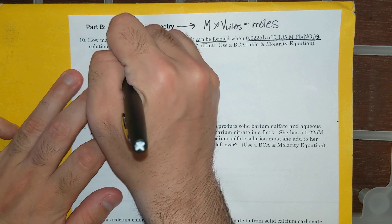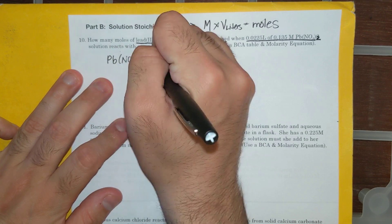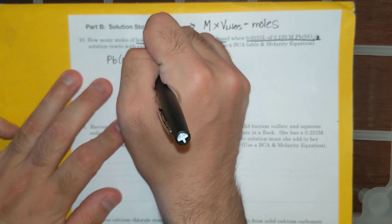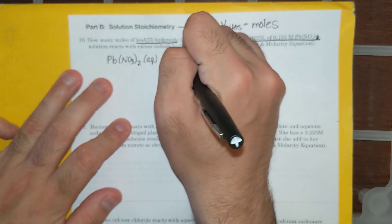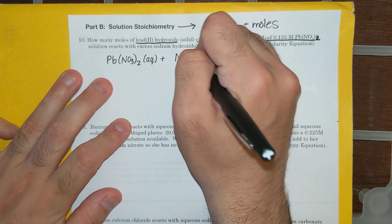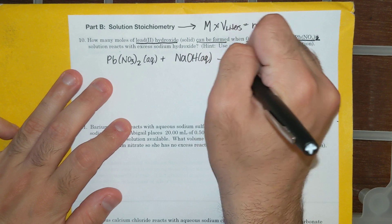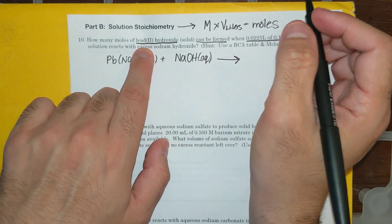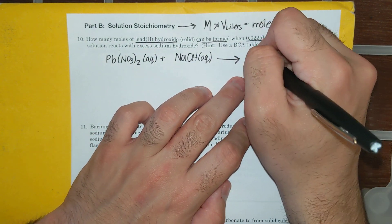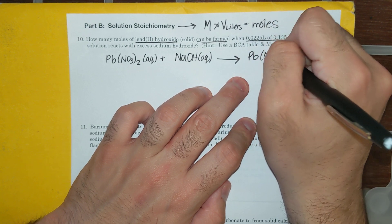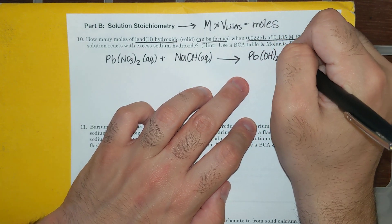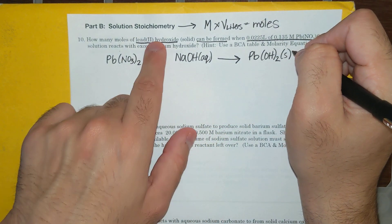So I'm going to start with this. So Pb(NO3)2, that's aqueous, plus aqueous excess sodium hydroxide. One of the products is lead-to-hydroxide, so Pb(OH)2, and it says it's solid. That's one of the products.